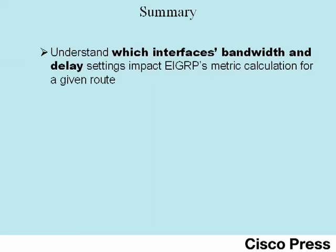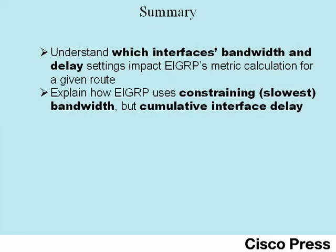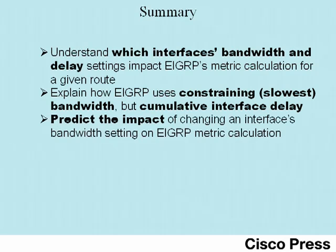This concludes ICND2 Lab 6. In this lab, you've understood which interface's bandwidth and delay settings impact EIGRP's metric calculation. You've learned how EIGRP uses the constraining or slowest bandwidth and the cumulative interface delay when calculating its metric. Finally, you've seen how to predict the impact of changing an interface's bandwidth setting on the metric calculated by EIGRP.